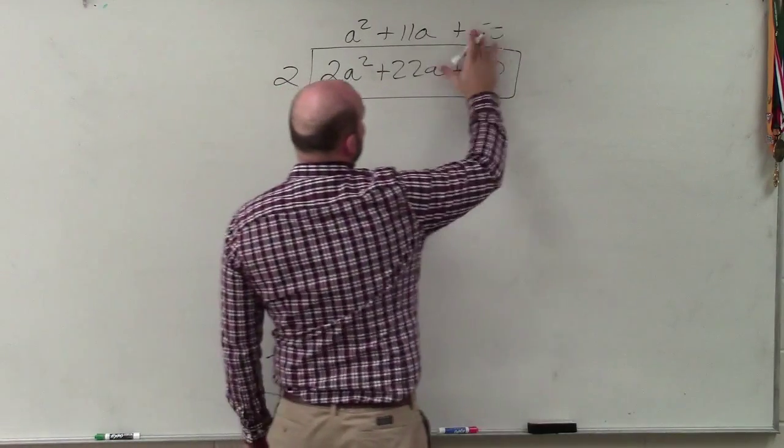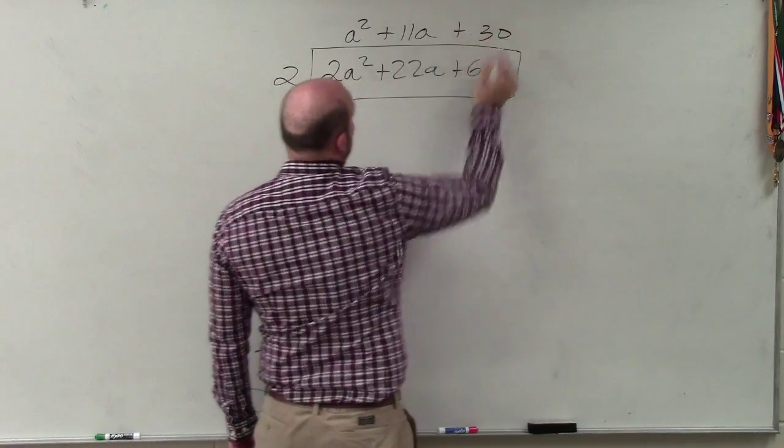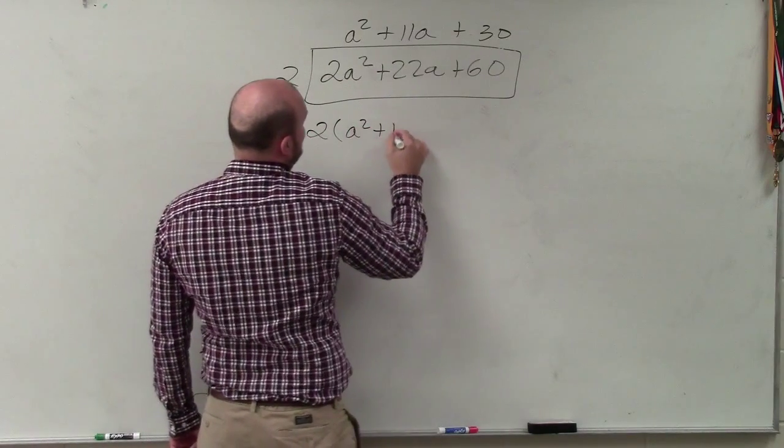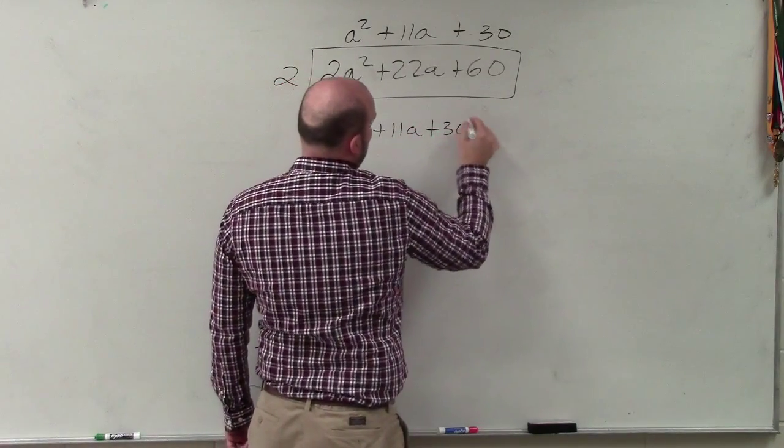30, sorry. We have to divide that out. So in reality, we have 2 times a² + 11a + 30.